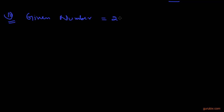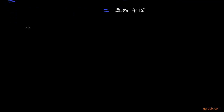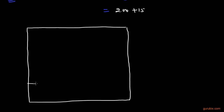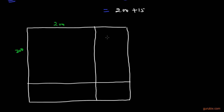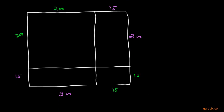Now we shall move to the second part. We have to find the square of 215. We shall write 215 as 200 plus 15. Now we shall draw a square and make 4 parts of it, writing 200 here and here, and 15 here and here.